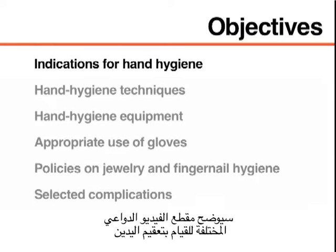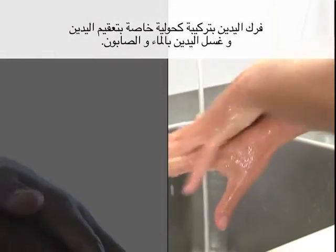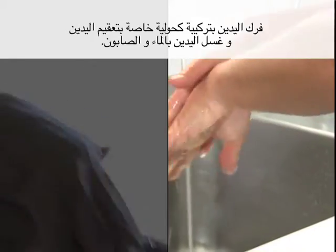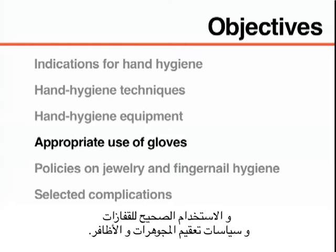This video will demonstrate the various indications to perform hand hygiene as well as two different hand hygiene techniques: hand rubbing with an alcohol-based hand rub formulation and hand washing with soap and water. This video will also review hand hygiene equipment, the appropriate use of gloves, and policies on jewelry and fingernail hygiene.